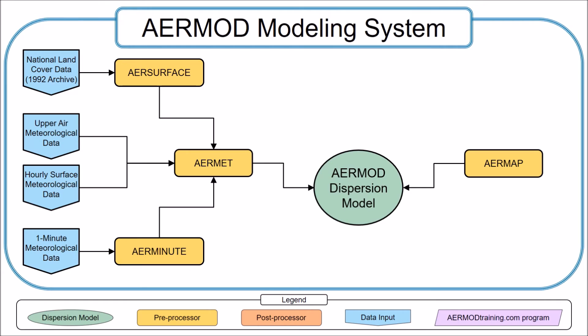The receptor elevations and hill height scales are generated by AERMAP, which is the terrain preprocessor. You have the option to define receptor locations in AERMAP, but we suggest creating a receptor network outside of AERMAP to remove the complexity. To do that, we created a program called AIRGRID that you can use to generate a receptor network, and you can download this program from airmodtraining.com.